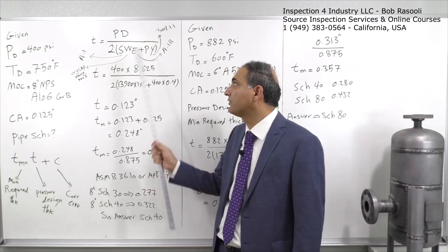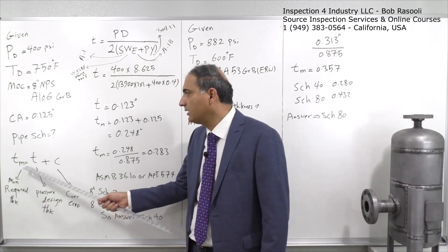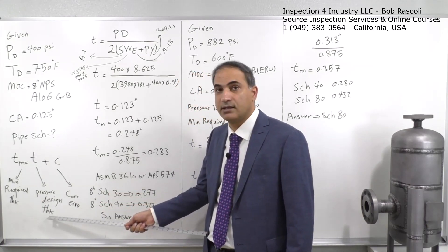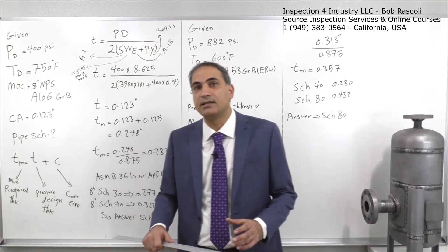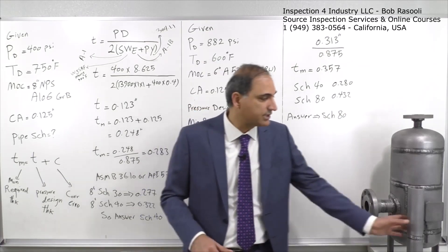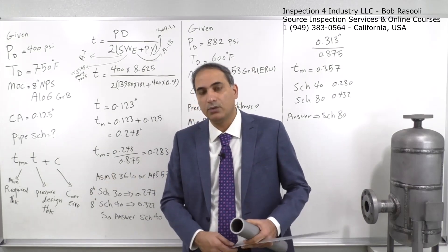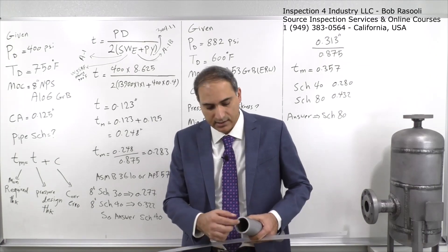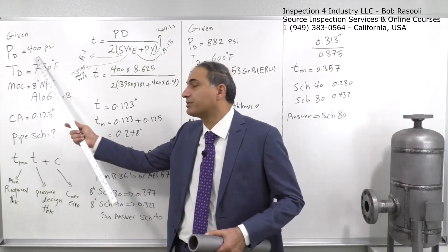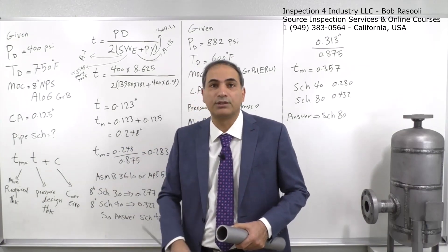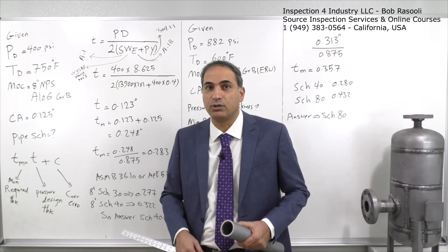ASME B31.3 Section 304.1.1 states that TM — the minimum required thickness — equals T, the pressure design thickness, plus the corrosion allowance. The pressure design thickness is the wall thickness needed purely to resist internal pressure. We want to determine what wall thickness this 8-inch pipe needs to withstand the given pressure, then add corrosion allowance to determine the required pipe schedule.